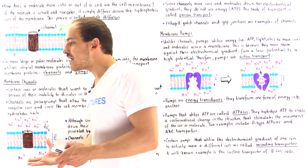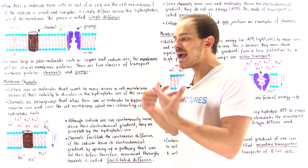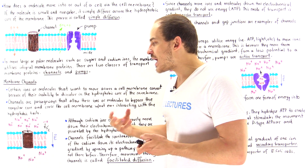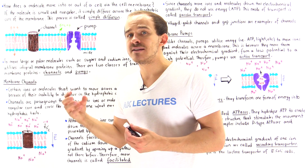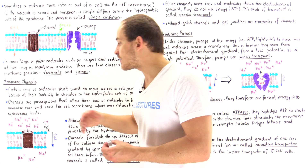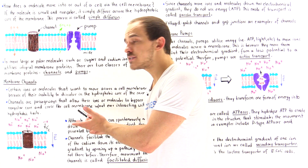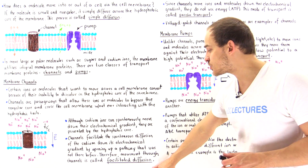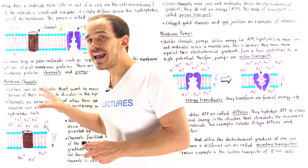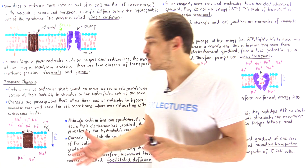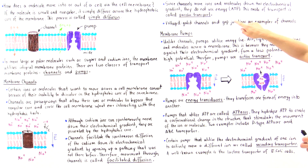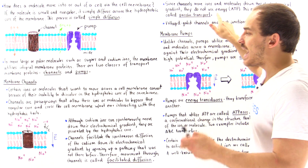Because these channels create passageways that lack the hydrophobic core, they facilitate the spontaneous diffusion of ions — and in some cases molecules — down their electrochemical gradient. This type of transport is known as facilitated diffusion. Because no ATP molecules are used to carry out the process, this type of transport is also known as passive transport.